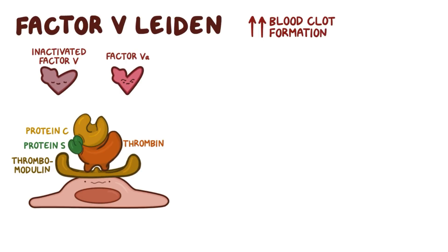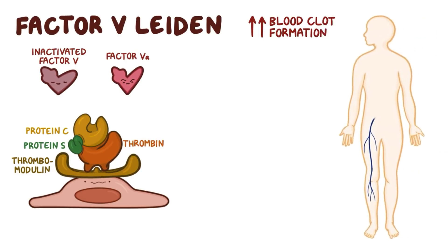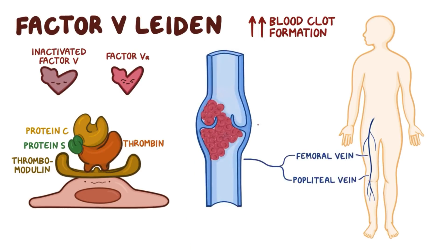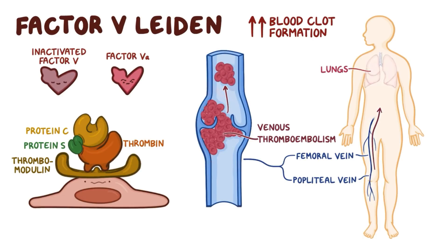Usually these clots develop in the deep veins of the lower limbs like the popliteal and femoral veins, causing a venous thromboembolism where small parts of the clot break off and travel to other organs like the lungs, the brain, or the liver, cutting off blood flow to those organs.